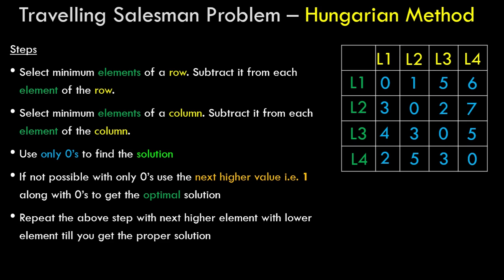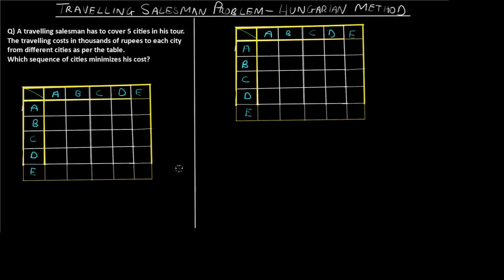As you can see on the screen, the question states that a traveling salesman has to cover five different cities: A, B, C, D, and E. The traveling cost is given in thousands, and we are trying to optimize that cost. Our goal is to find which sequence of cities minimizes this cost.